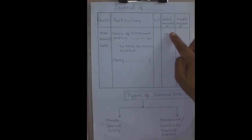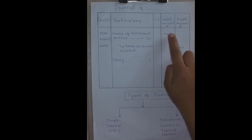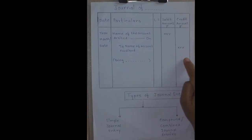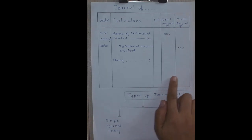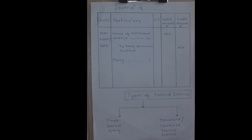The next column is debit amount. In this column the amount of the debit is written. Then there is the credit amount column, in which the amount of the credit account is written. So that is a brief description about the specimen format, ruling, or pro forma of journal we have seen today.